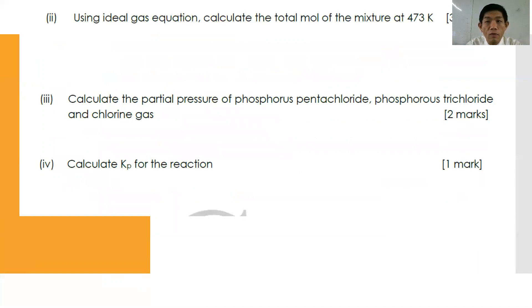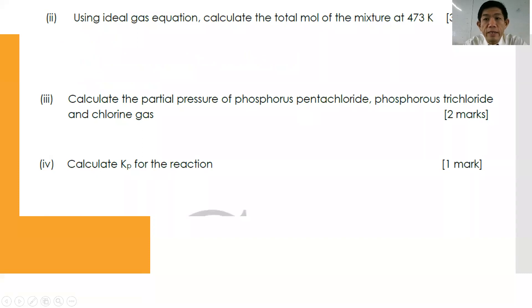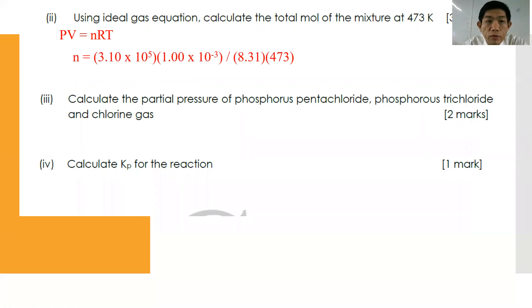Using the ideal gas equation PV = nRT, calculate the total moles of the mixture at 473 K. N = (3.10 × 10⁵ × 1.00 × 10⁻³) / (8.31 × 473). Note that the volume given in dm³ must be converted to m³ by multiplying by 10⁻³. Pressing the calculator, the total moles = 0.0789 mol.